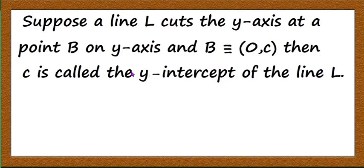Now let us come to the slope-intercept form. We have the idea of the slope of the line, but you should also know the idea of the intercept of the line. Suppose the line cuts the y-axis at a point B with coordinates (0, c), since it is a point on the y-axis its x-coordinate is 0. Then c is called the y-intercept of the line L.